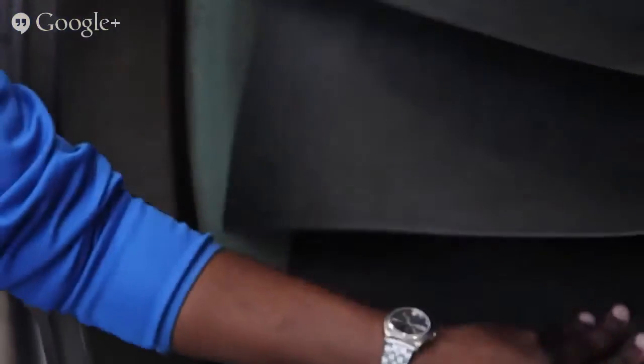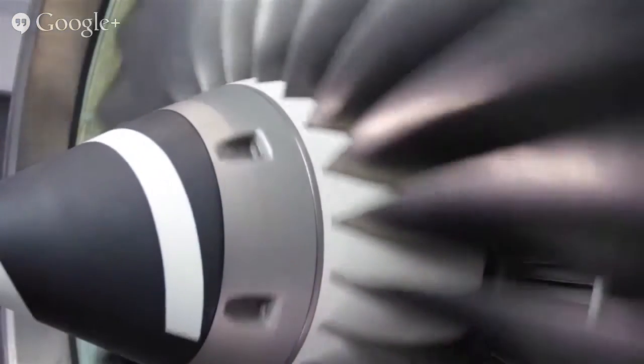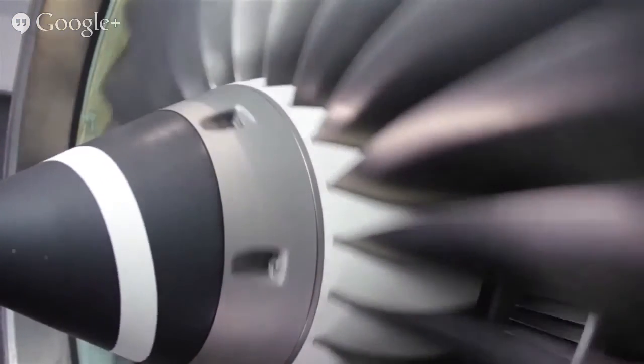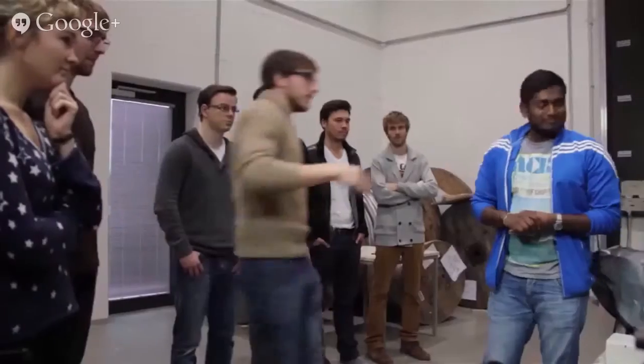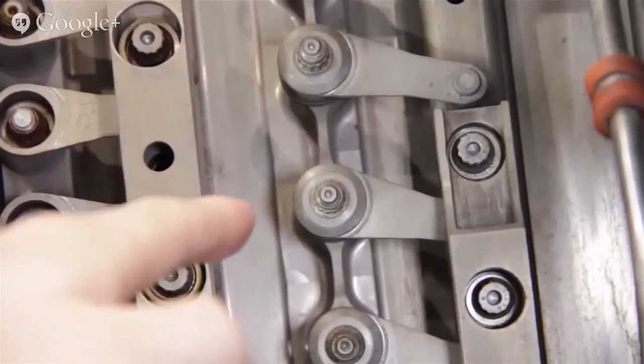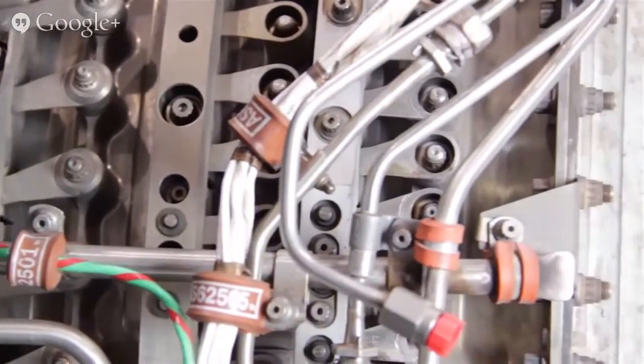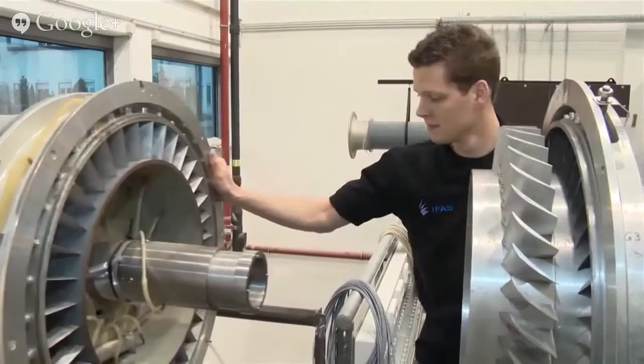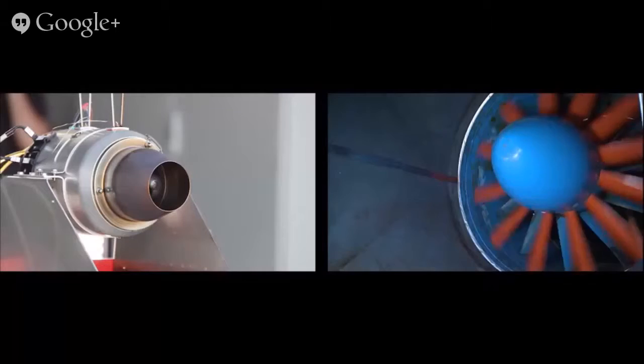For example, the real jet engine V2500 from the Airbus A320 is available for research and education. For instance, measurements are conducted to investigate wear mechanisms or reduction of noise emissions. With this testing capability, NFL is unique in German academia.